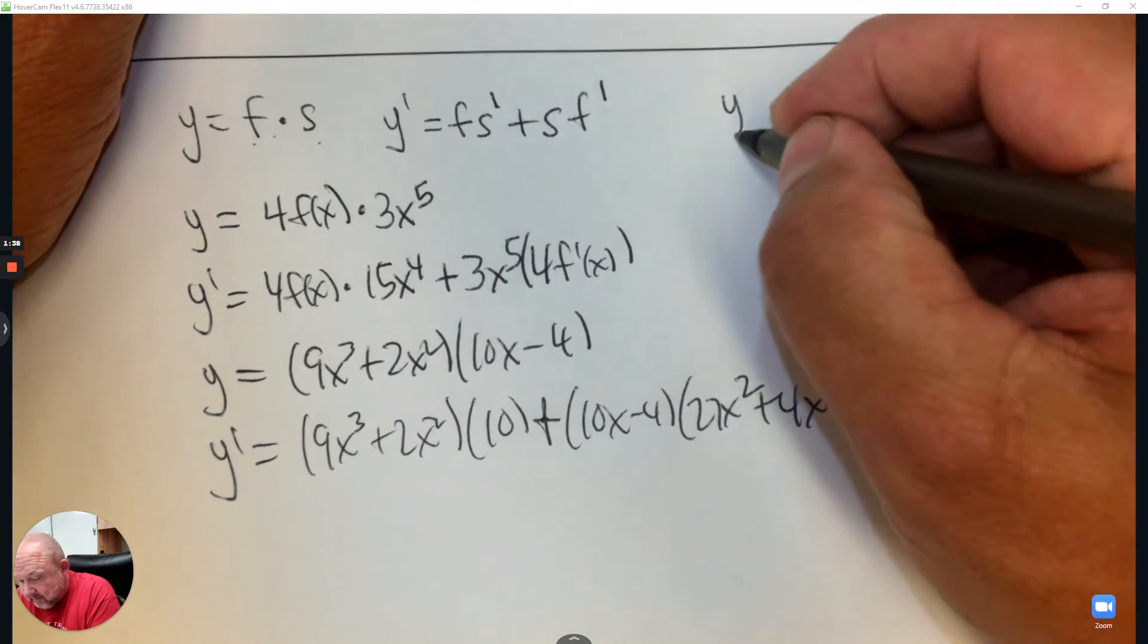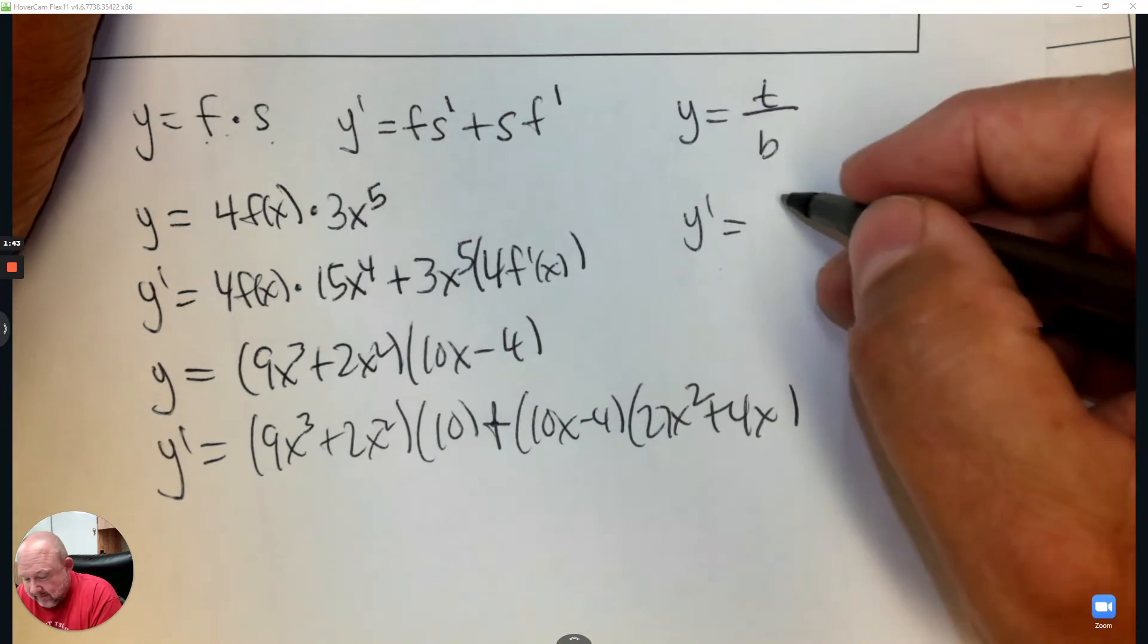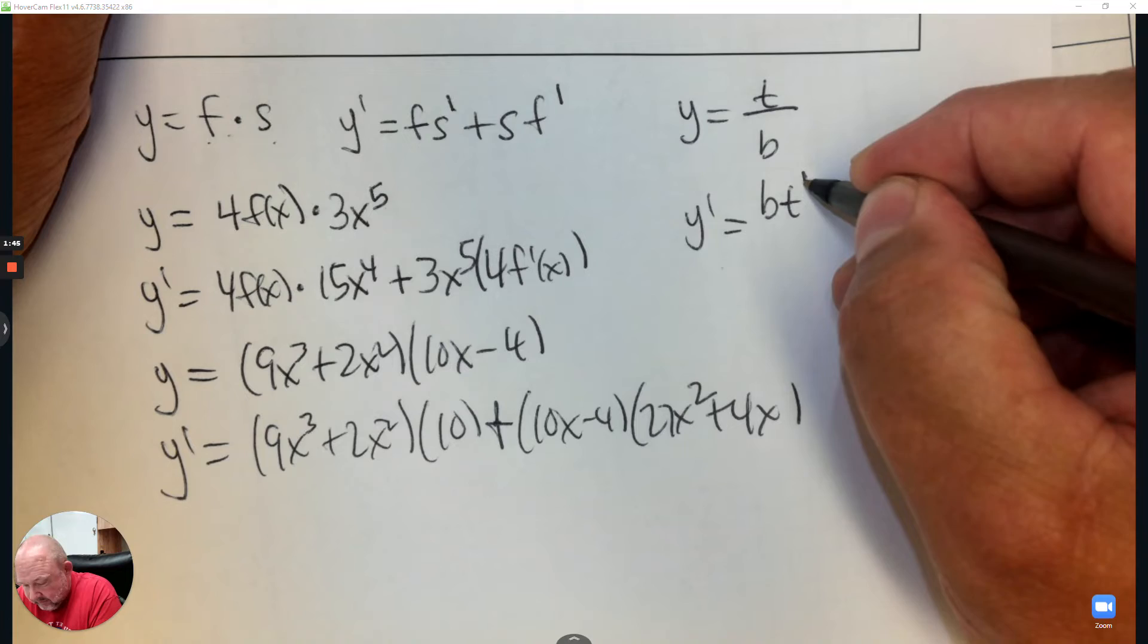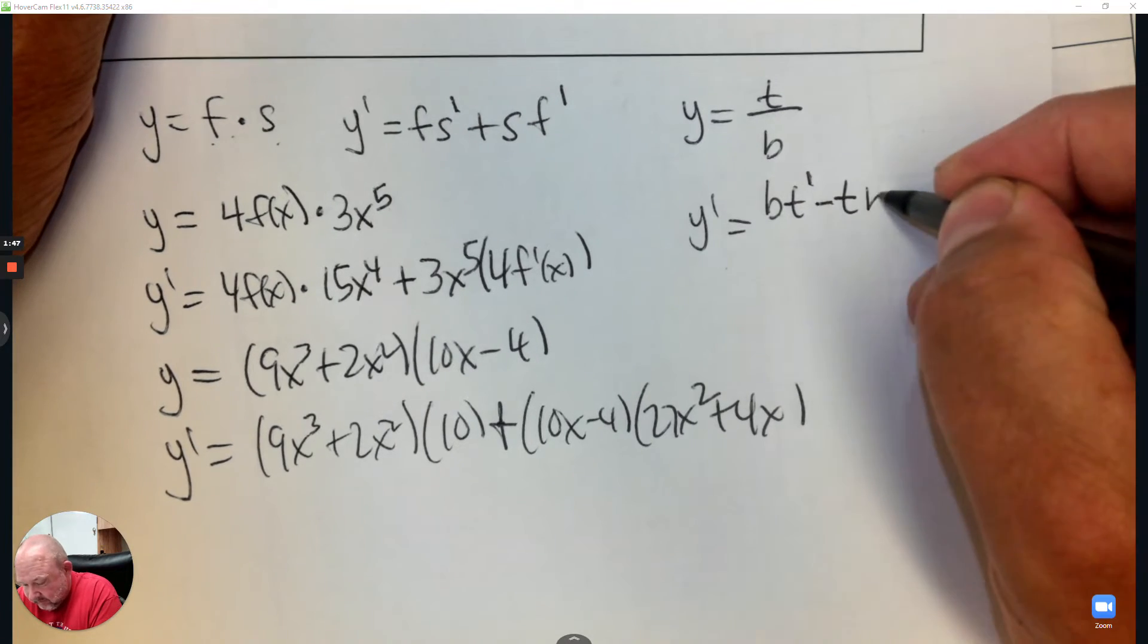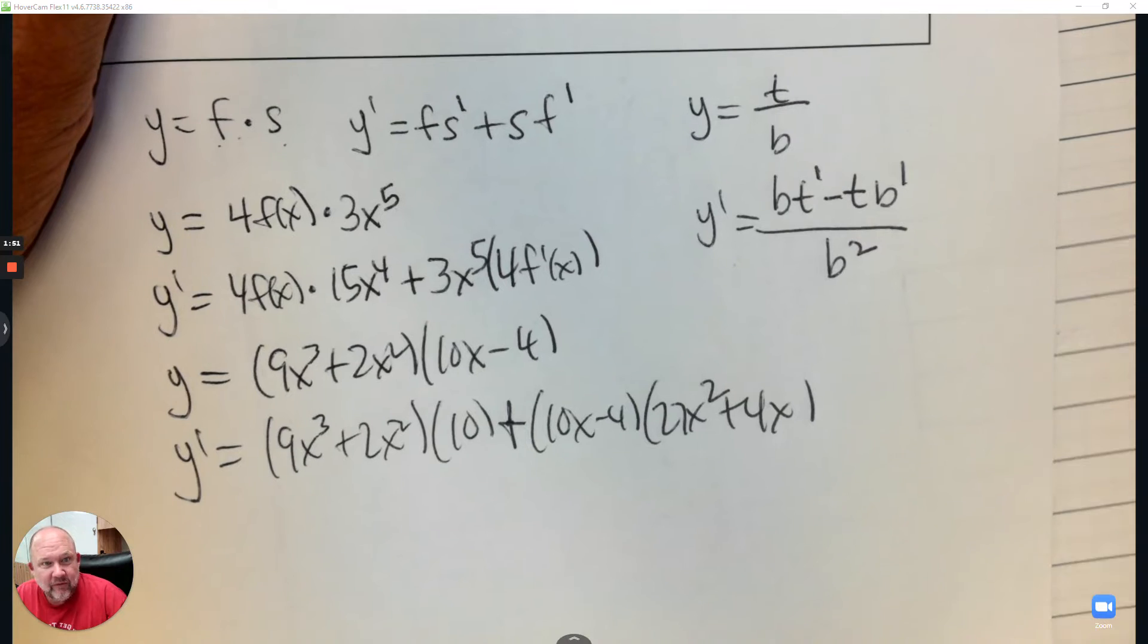How about the other one? How about if you have a quotient? So you have top and bottom. What does the derivative look like? That's the bottom times the derivative of the top minus the top times the derivative of the bottom, and then the bottom squared. So there's the order for that.